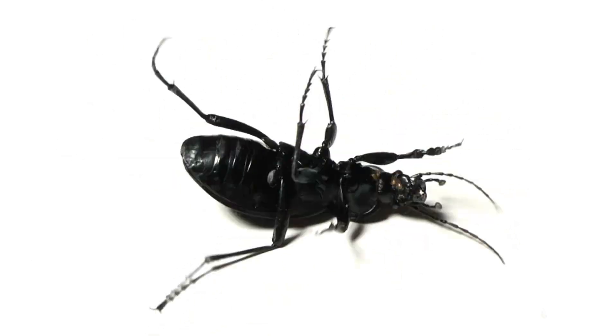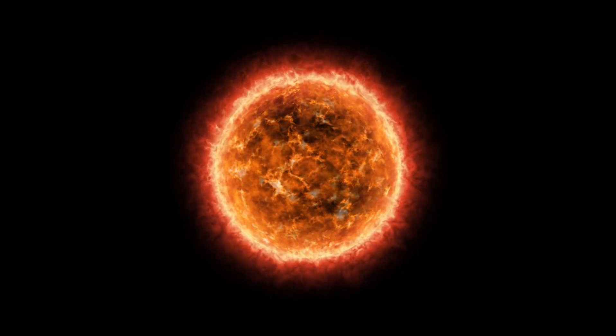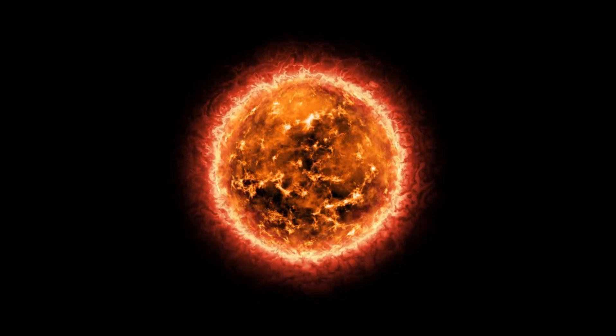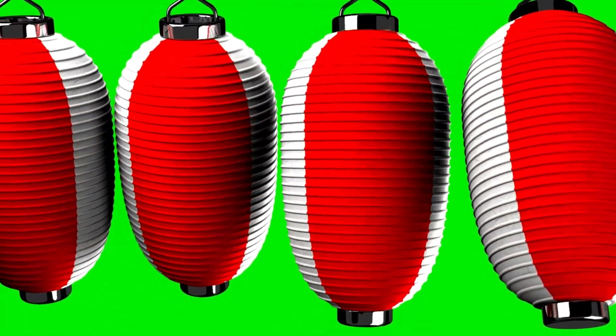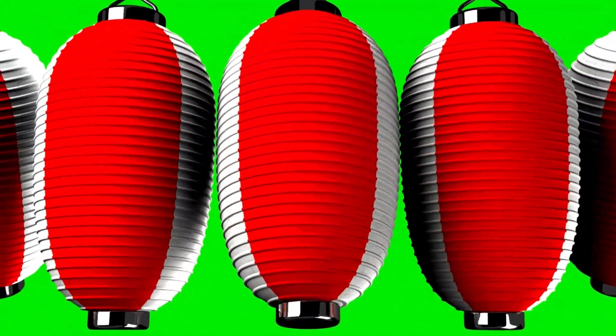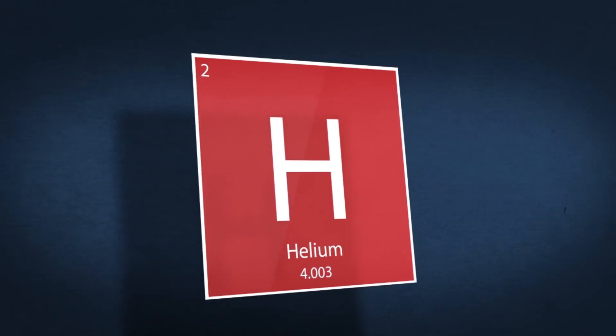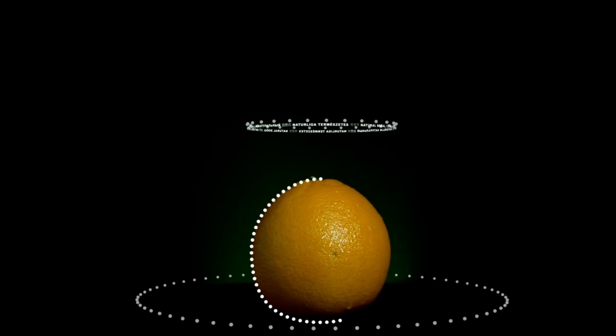This instability contributes to the pronounced pulsations observed in Betelgeuse as the balance between gravity and radiation pressure becomes increasingly fragile. As Betelgeuse approaches the final stages of its life, its pulsations and convective activity grow increasingly intense. The depletion of its nuclear fuel sets the stage for a dramatic supernova explosion, marking the end of its existence as a red supergiant.